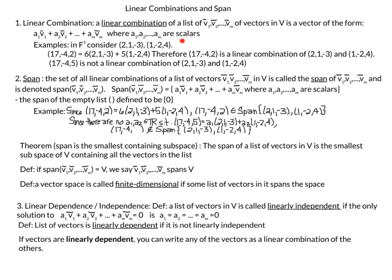A quick example: if you're given the vectors (2, 1, -3) and (1, -2, 4), then the vector (17, -4, 2) is a linear combination of these two vectors because it equals 6 times (2, 1, -3) plus 5 times (1, -2, 4). Two types of questions arise: what do the linear combinations of these two vectors look like, and given a vector, is it a linear combination of the given vectors?